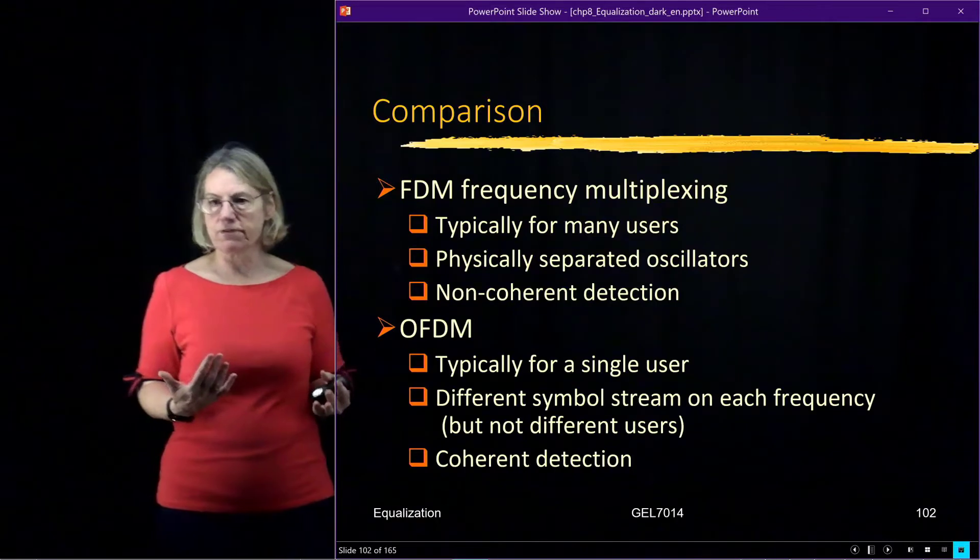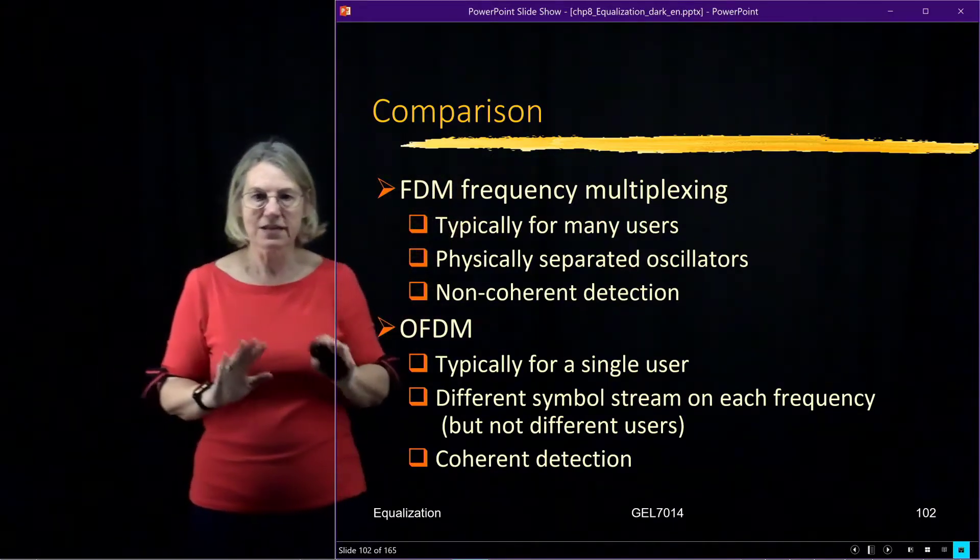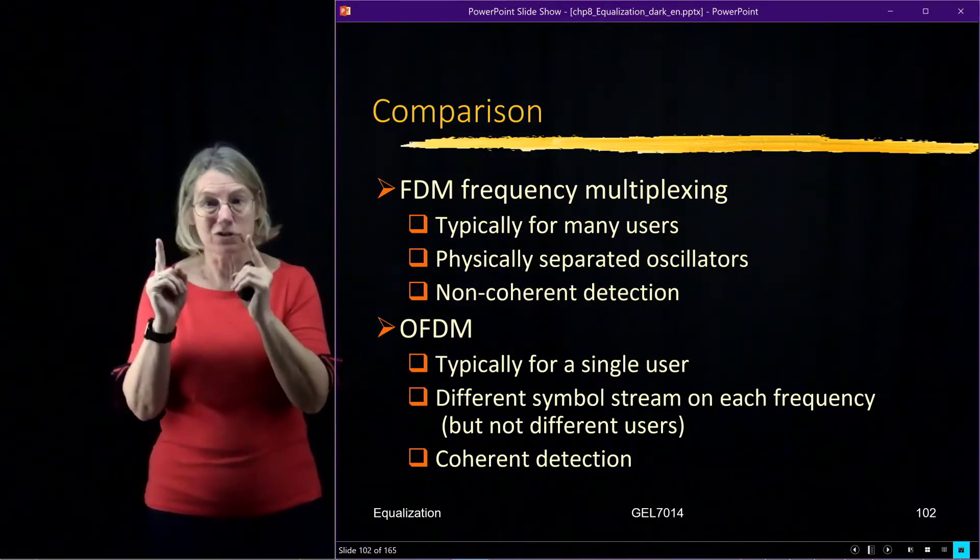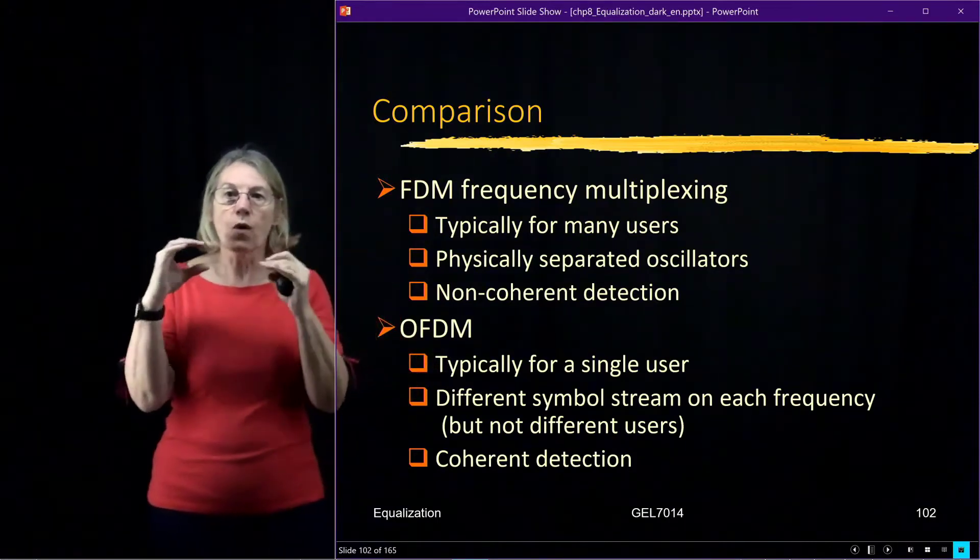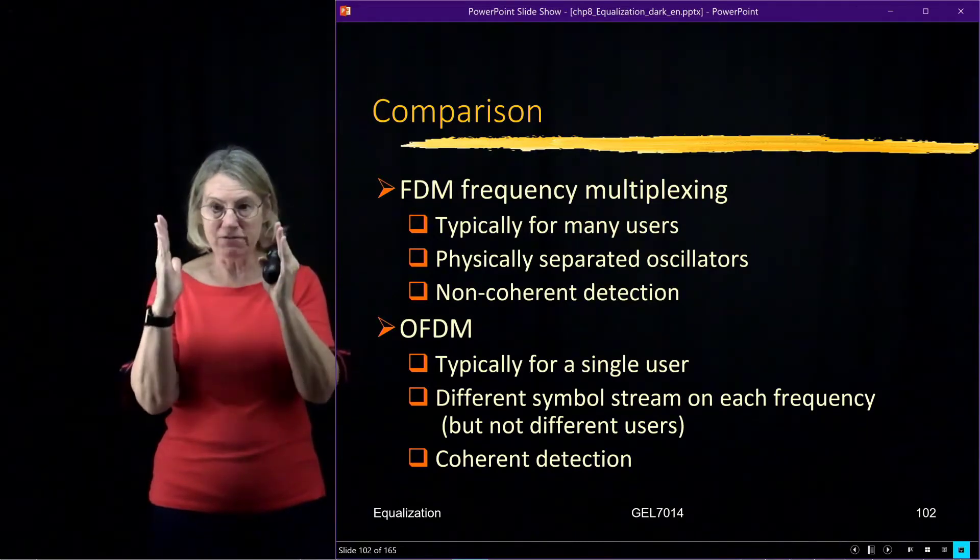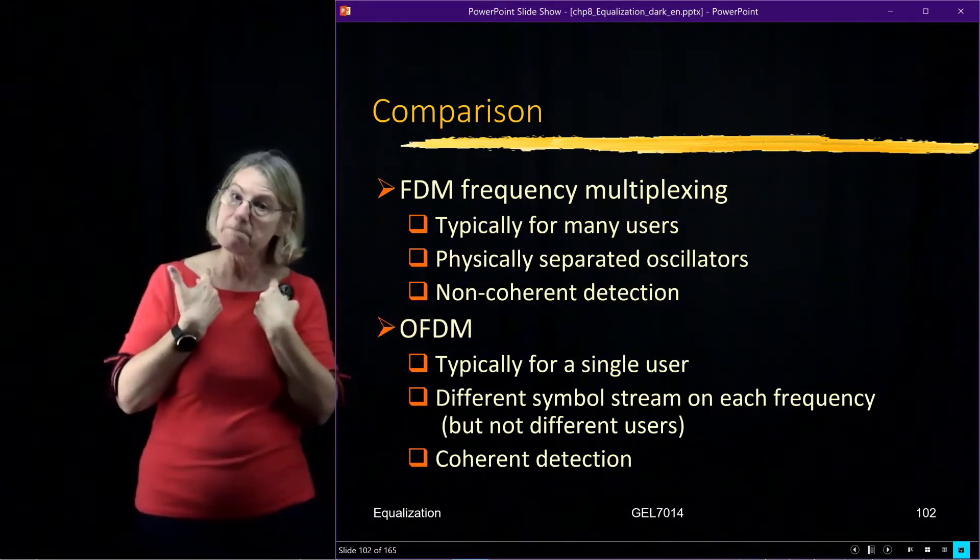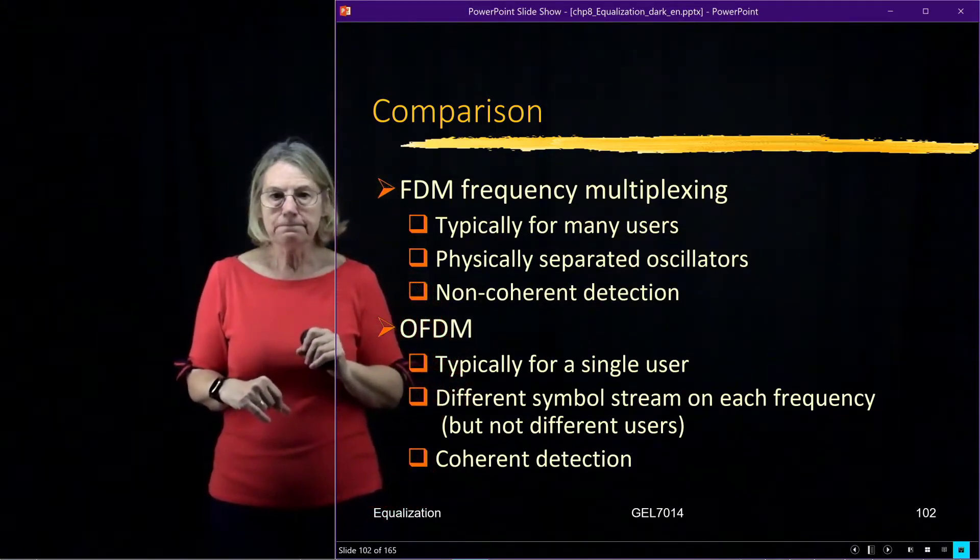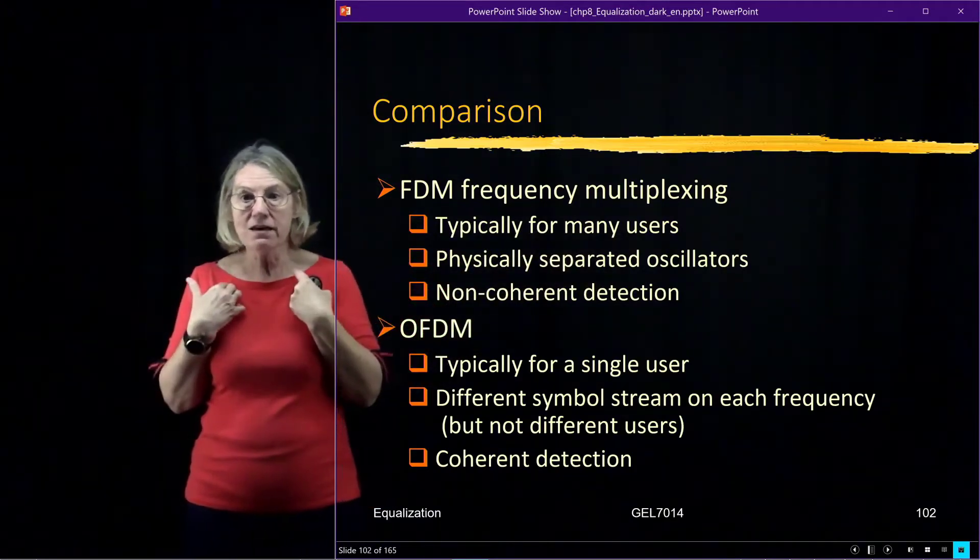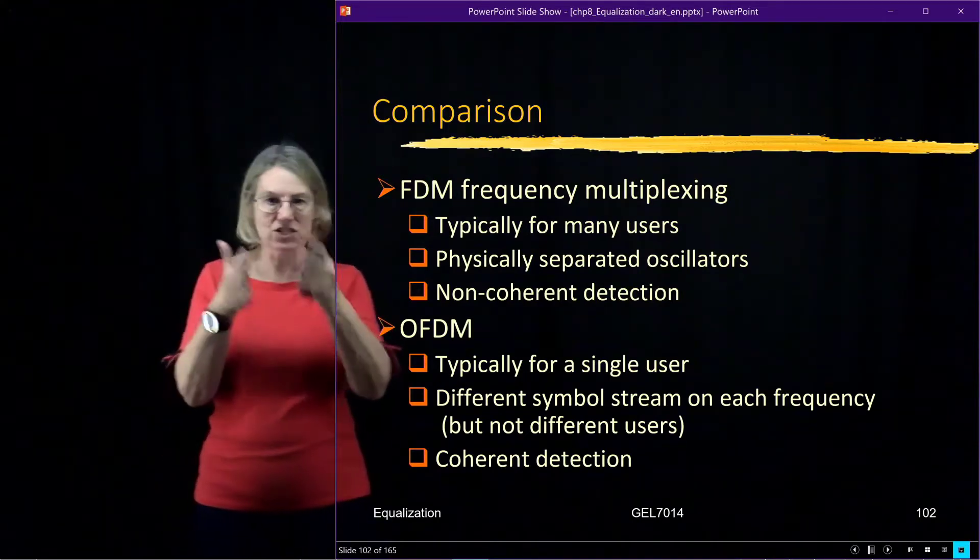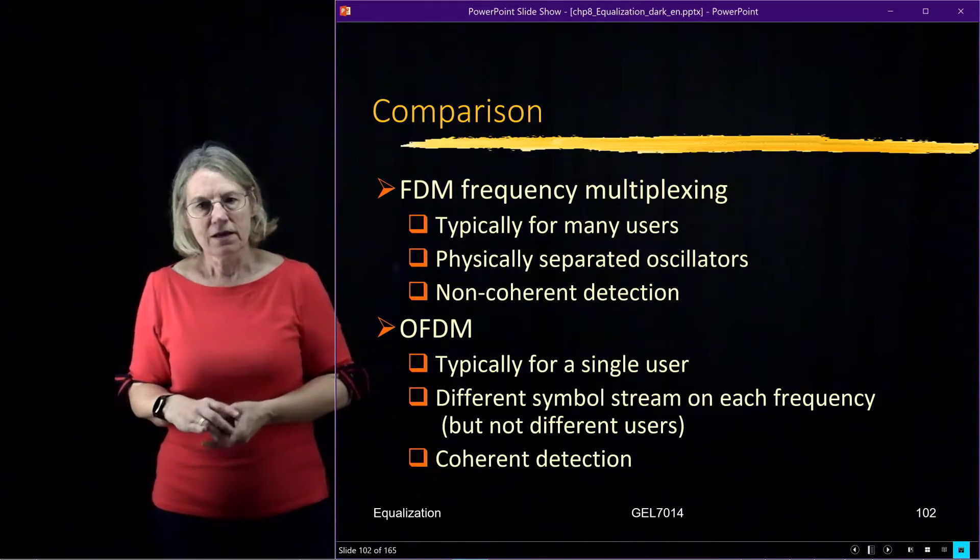OFDM is different. It's typically not that different users are using different portions of the spectrum. All these frequencies being multiplexed are used by one user. It's not a way to share frequencies among different users. I take a band that's been given to me and divide it up, exploiting multiple frequencies within the band given to a single user. Generally, each subdivision isn't going to a different person or channel. It's all me, but I'm sending a different data stream to each one. They each have independent data; it's just all my data. Typically, we use coherent detection for OFDM.